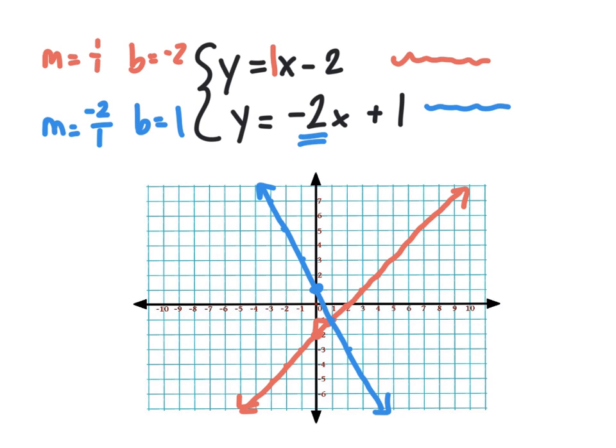Remember, we're trying to solve the system here. So what we're really looking for is the ordered pair where the lines cross. And you can see that it's going to zero in right there at 1, negative 1. So the solution to this system, where the lines cross, is 1 comma negative 1.